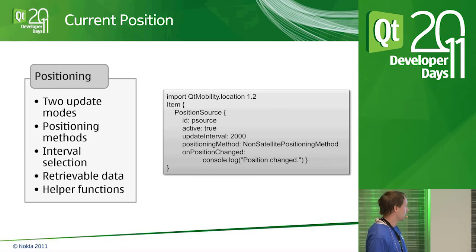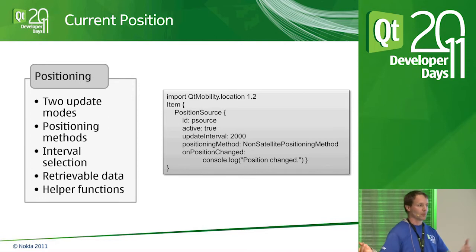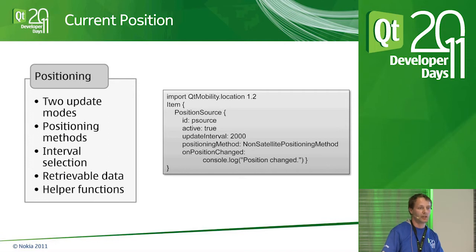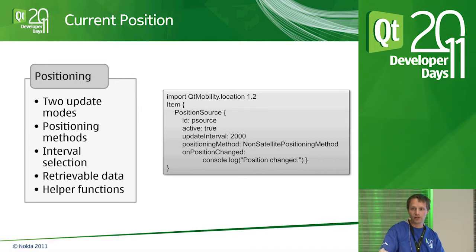On top of that, there are a couple of convenience functions — for example, what's the distance between this coordinate and another. That's actually in the coordinate API. What you get back is longitude, latitude, possibly altitude, and timestamps. Those are the four most important pieces of data.